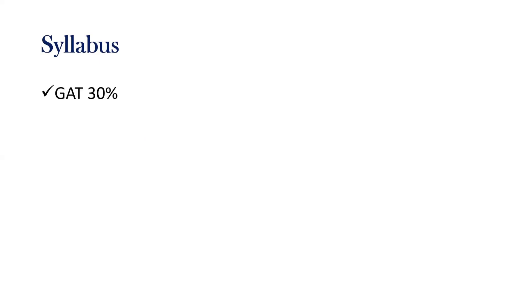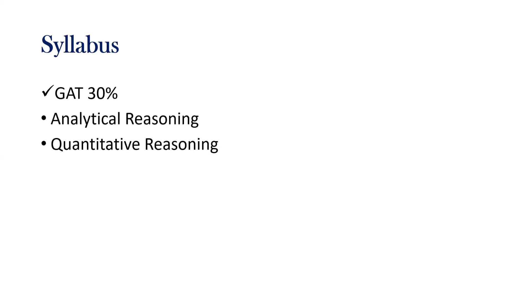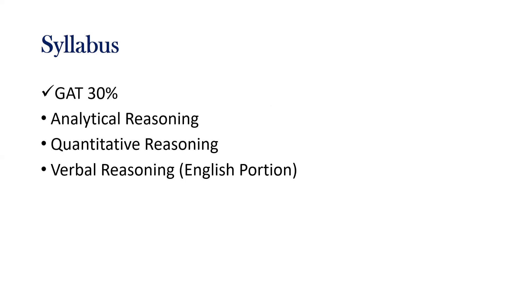The syllabus will be divided into two portions: a GAT portion and the subject-based portion. GAT will be 30% of the test. It includes analytical reasoning, quantitative reasoning, and verbal reasoning, which is the English portion — covering synonyms, vocabulary, and tenses.